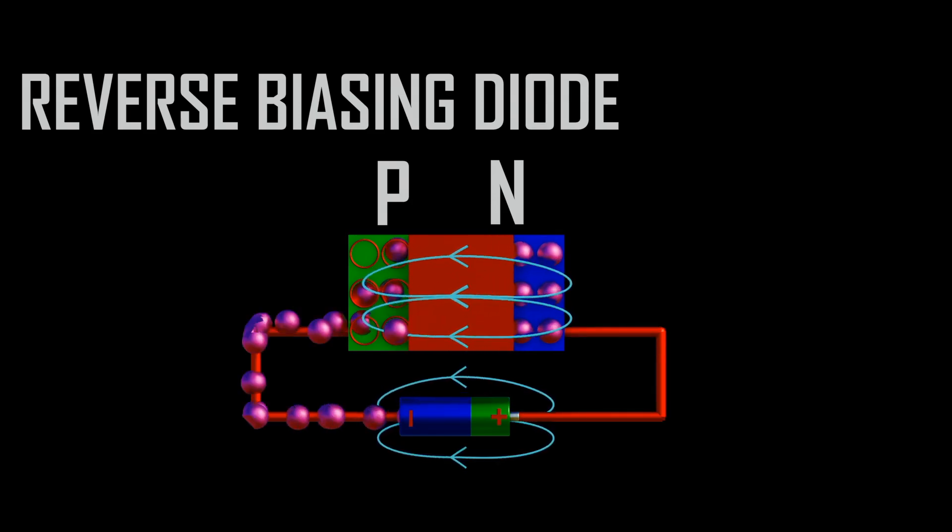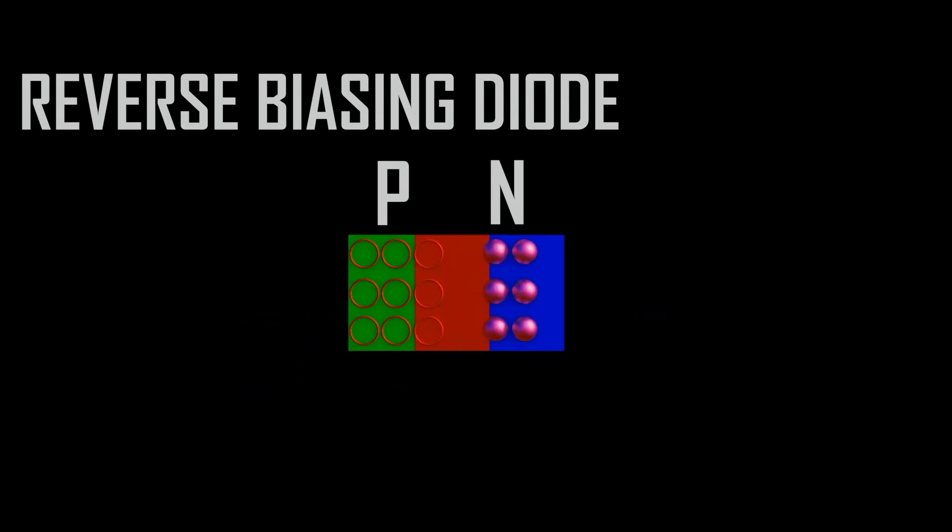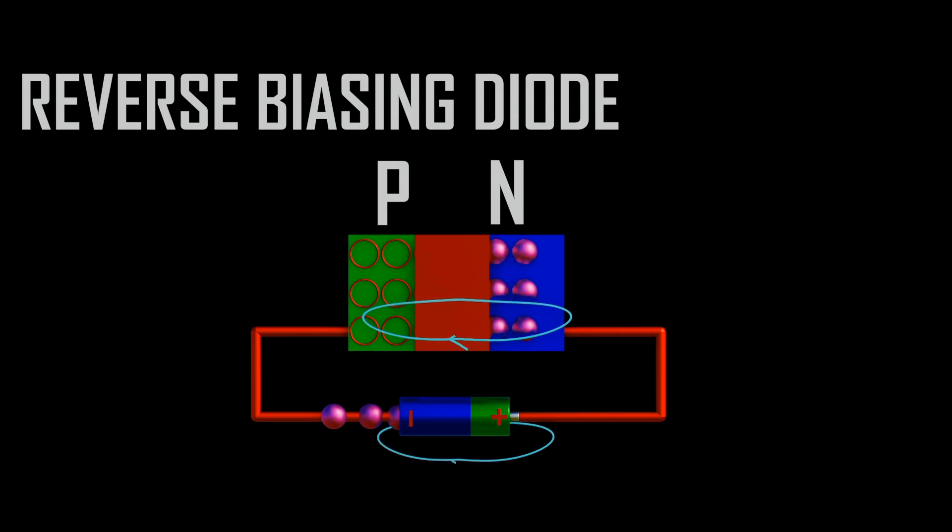Under reverse bias, the electric field is formed opposite, creating a repulsive force that causes the depletion region to increase, preventing further electron jump to the opposite side.